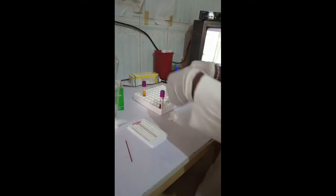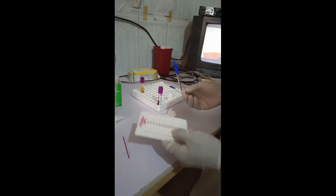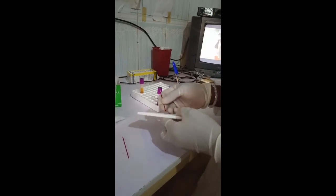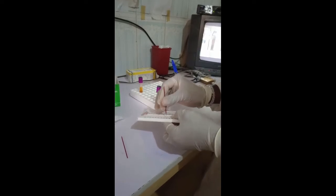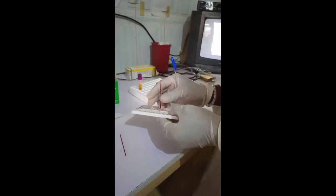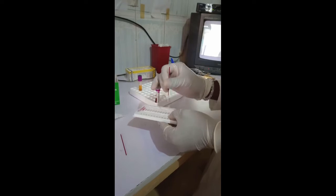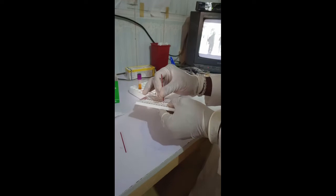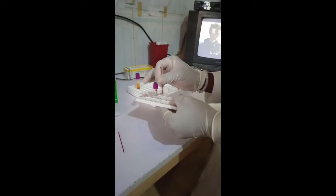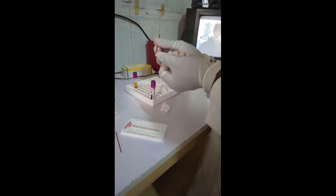After which you seal the capillary tube. Seal one end of it with your sealant. You pin and rotate a bit. Be sure not to press so hard because the tube can break and the blood will spill on you. So you pin and rotate a bit. See the sealant entering the tube. You can see the sealant inside the tube. That means it has been sealed.